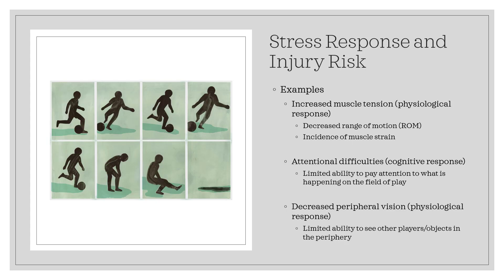The stress response and injury risk — some examples. Increased muscle tension, which is a physiological response, results in decreased range of motion and incidence of muscle strain. Attentional difficulties, which is a cognitive response, may result in a limited ability to pay attention to what is happening on the field of play or even other individuals within your environment. Decreased peripheral vision is a physiological response and may result in a limited ability to see other players or objects in our periphery, thus increasing our risk of injury.